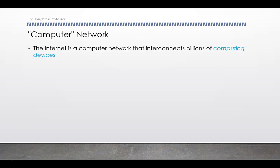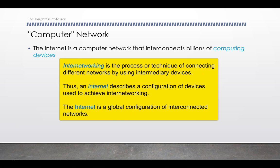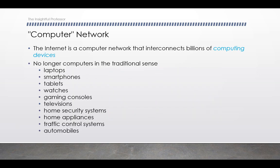The internet is a computer network that interconnects billions of computing devices. Note that we refer to internet with a capital I, meaning the internet that everyone is probably well aware of. But internet spelled with a small i is appropriate as well, because what we do is connect different networks together — this is called internetworking. The internet with a capital I refers to one grand collection of networks that is worldwide. We put 'computer' in quotes because it's no longer just traditional computers, but also laptops, smartphones, tablets, and all kinds of devices.